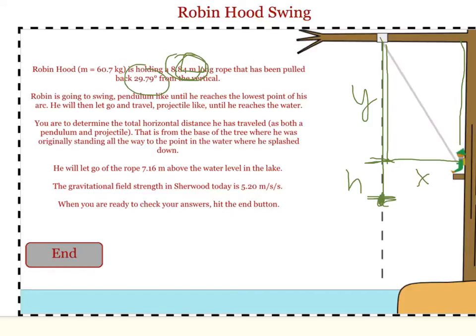Using that height, we can find the potential energy that Robin had at the beginning. We set that potential energy equal to his kinetic energy at the bottom, and find the speed that Robin had at his lowest point.